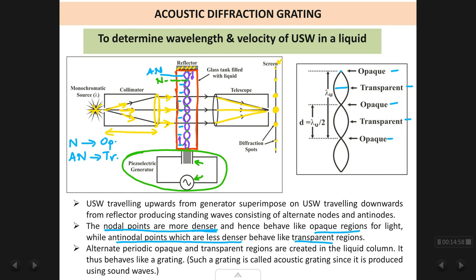So this is the experimental setup: a tank, an ultrasonic generator, a monochromatic source of light, a collimator to make the beam parallel, a telescope to converge the beam, and a screen to see the diffraction pattern. Our aim is to find the wavelength and the velocity of the ultrasonic waves.